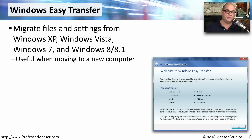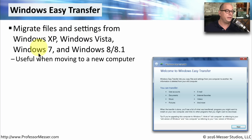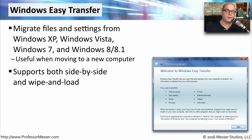When moving from one Windows operating system to another, you may not have a direct upgrade path. In those cases, you may have to back up your personal files and restore them onto the newer operating system. Microsoft has tried to make this easier by including Windows Easy Transfer, which allows you to migrate your files and configuration settings from Windows XP, Vista, Windows 7, and Windows 8. Windows Easy Transfer gives you flexibility — you can either connect two systems side by side, or back up all configuration files, wipe the system, install a new OS, and then load from the Easy Transfer backup.